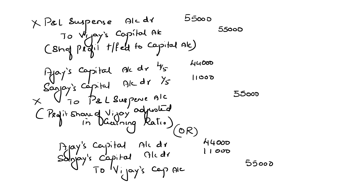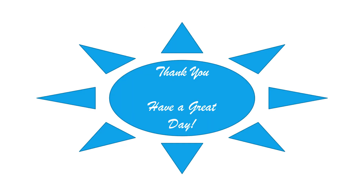So whenever there is a change in the profit sharing ratio of the continuing partners and they want a new ratio, either you pass these two entries or you can pass one single entry of debiting the gaining partners and crediting the deceased partner's capital account. All you have to do is the initial calculation of gaining ratio. This is how the accounting treatment changes when continuing partners decide to keep the same profit sharing ratio or when they decide to adopt a new profit sharing ratio. I hope this concept of passing journal entries in both situations is very clear to you. Thank you for joining me today. If you like this session, please do like and share it, subscribe to the channel, and refer it to your friends. Thank you, have a great day.